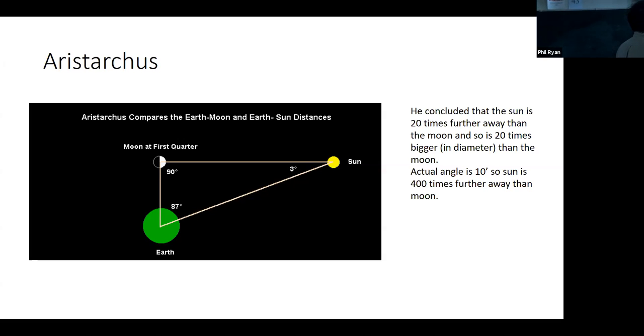And he said, well, with using some kind of primitive trig, he said, well, if that's the case, then this distance is around 20 times that distance there. He made a triangle and sort of measured himself. So the sun is, that means the sun is 20 times further away than the moon.